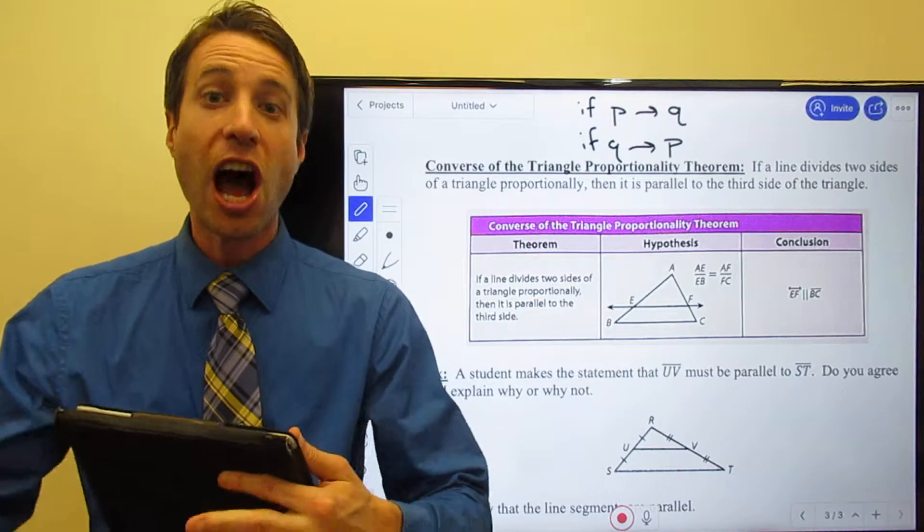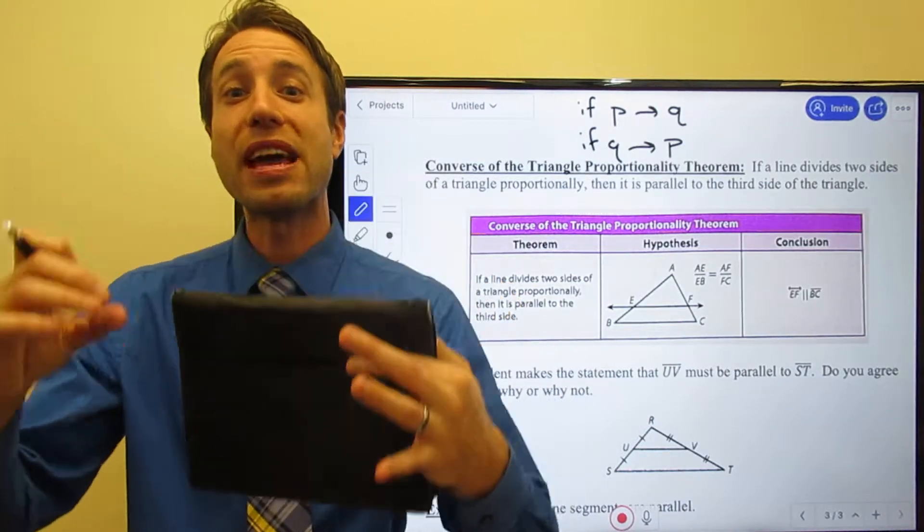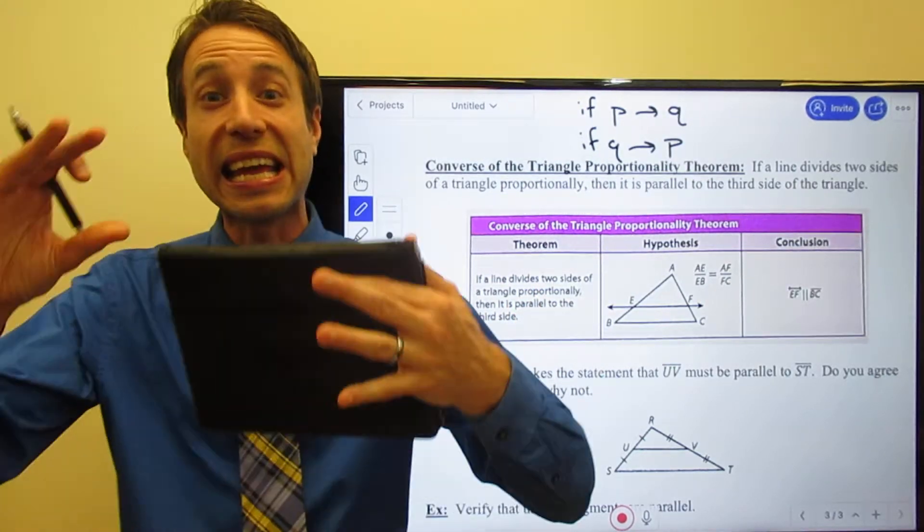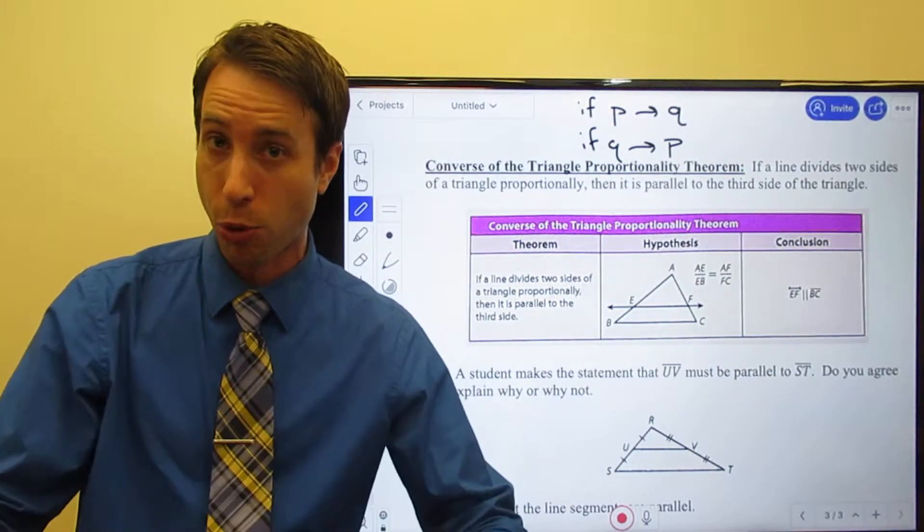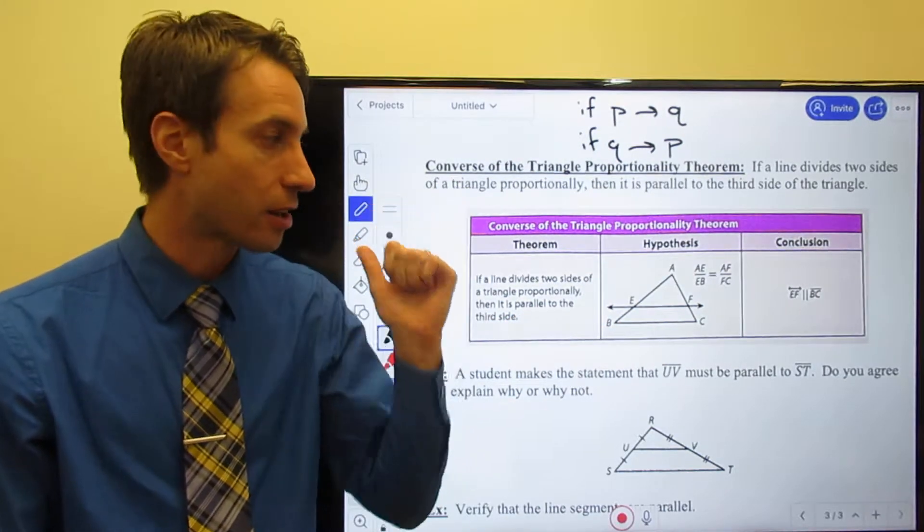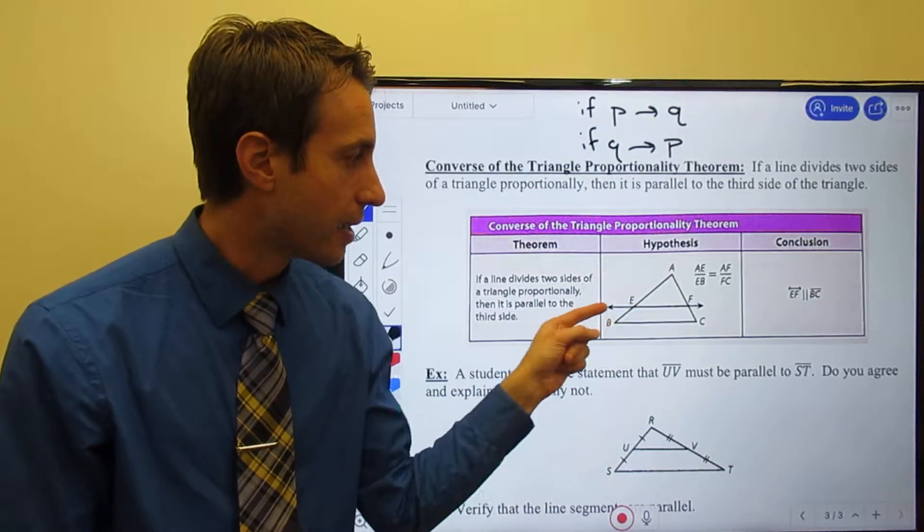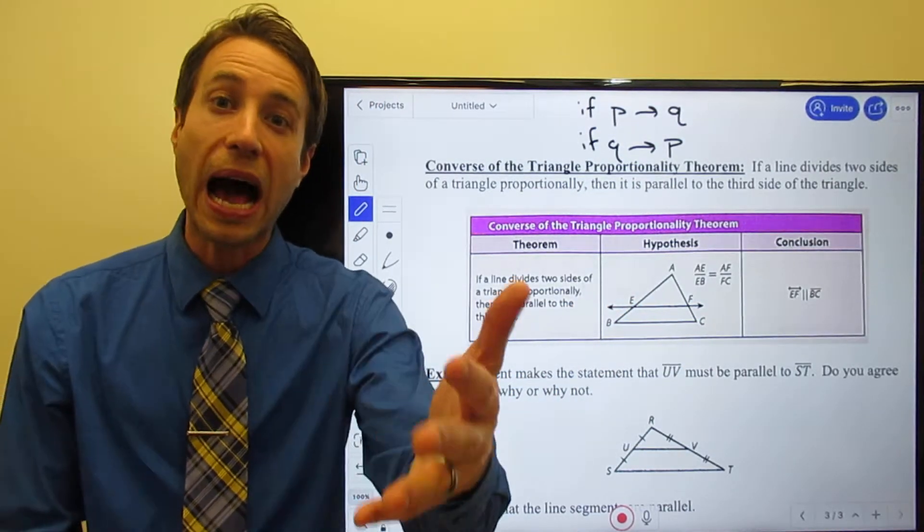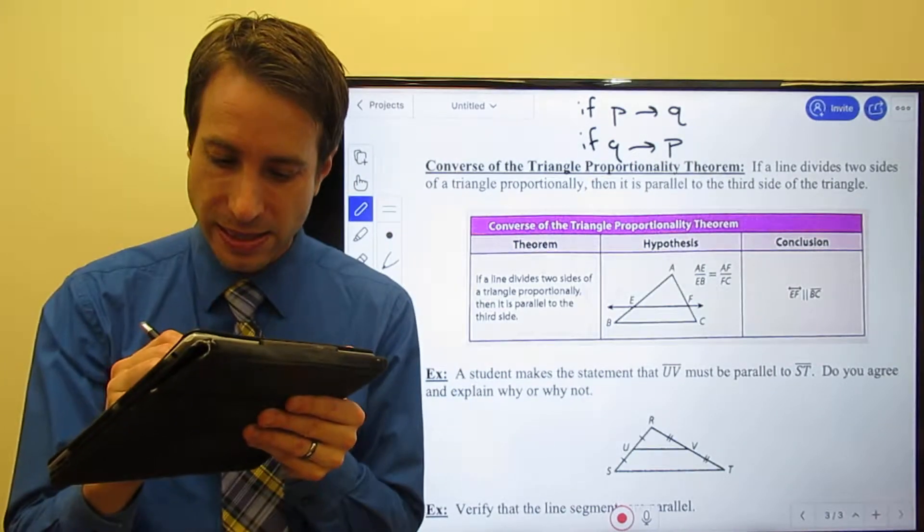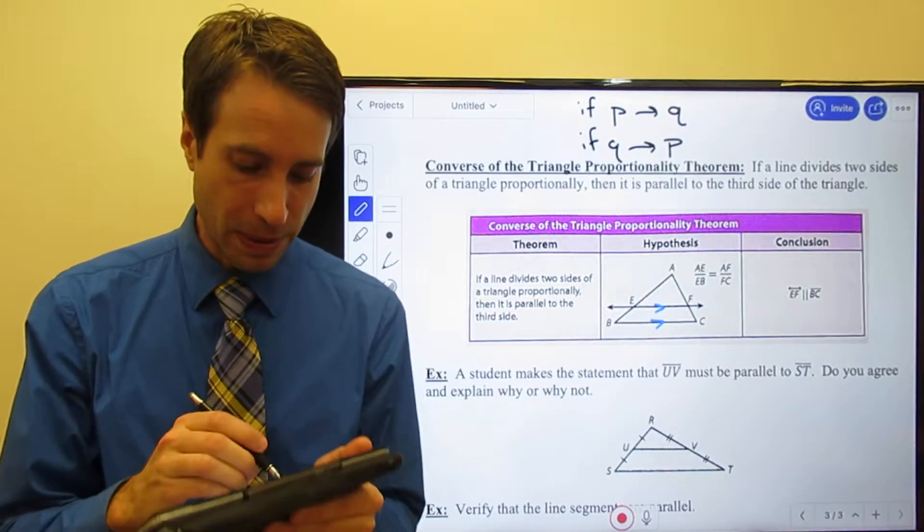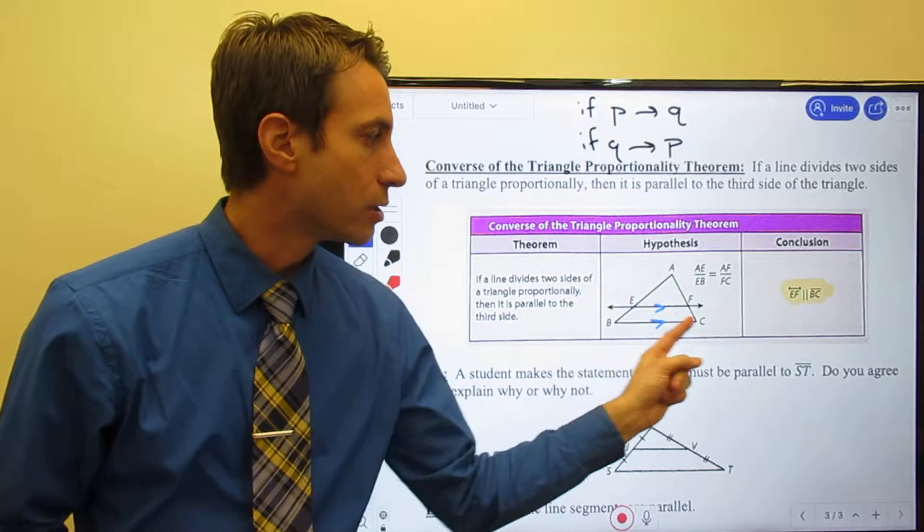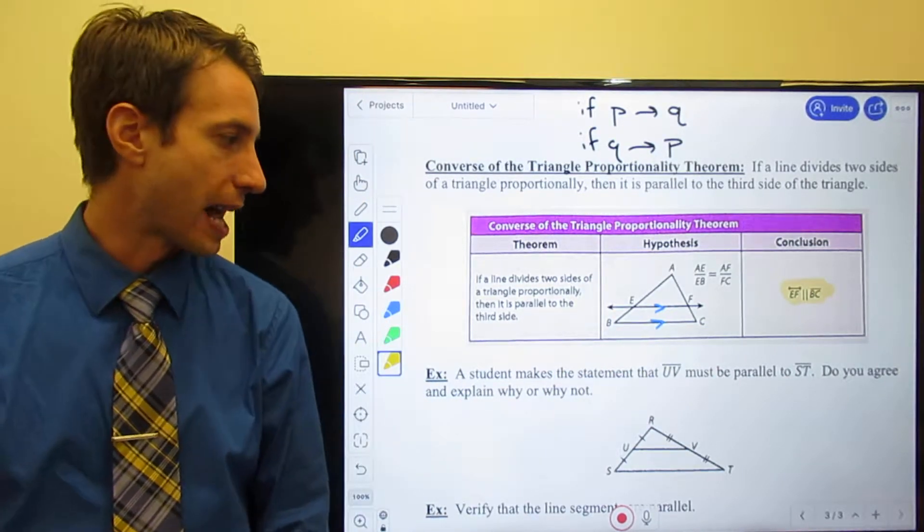In the previous page, you knew the lines were parallel and then we were able to say that the sides were split proportionally. In this theorem, we're saying if the sides of the triangle are split proportionally, then the two lines must be parallel. So it's the exact same picture we had on the previous page. I've got a line running through my triangle. What I'm saying is if we know the sides are proportionally split, then you can say those guys have to be parallel, which is exactly the statement they're making right here. EF is parallel to BC.